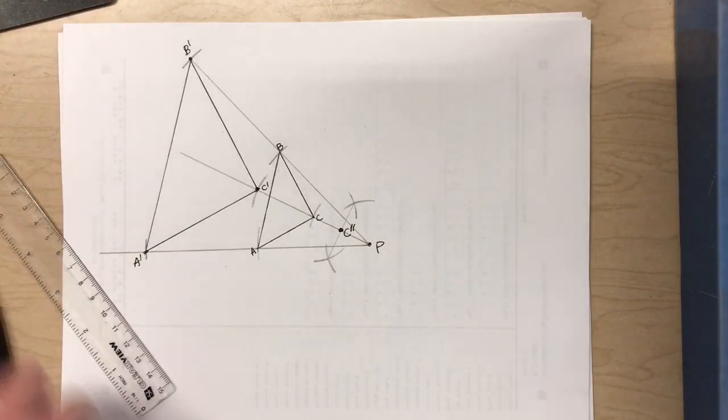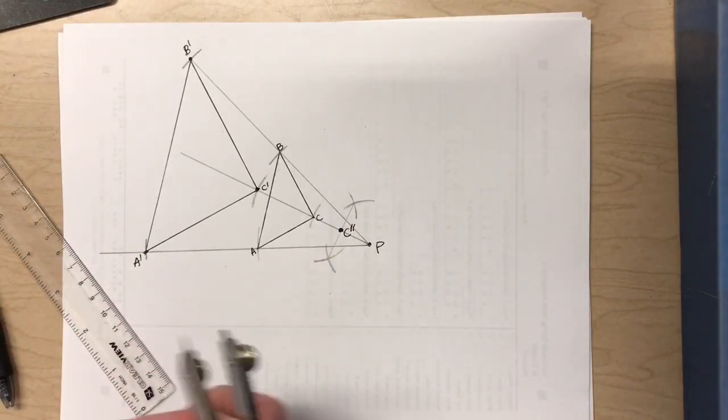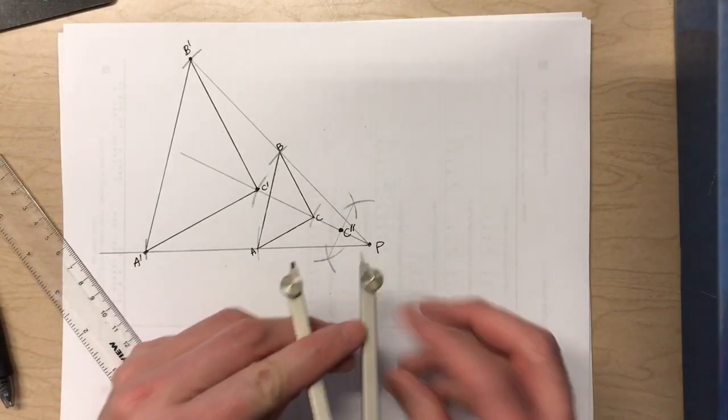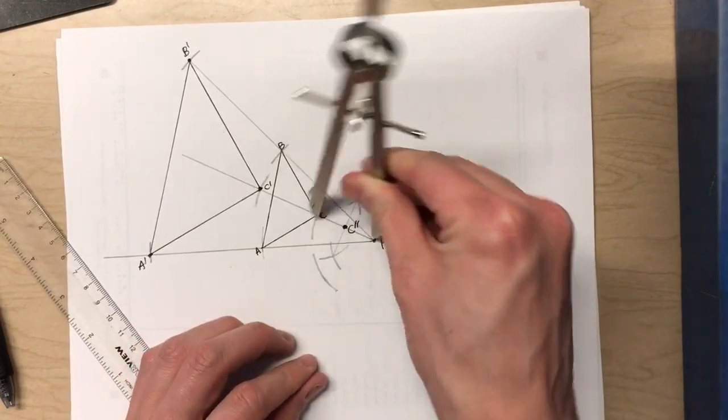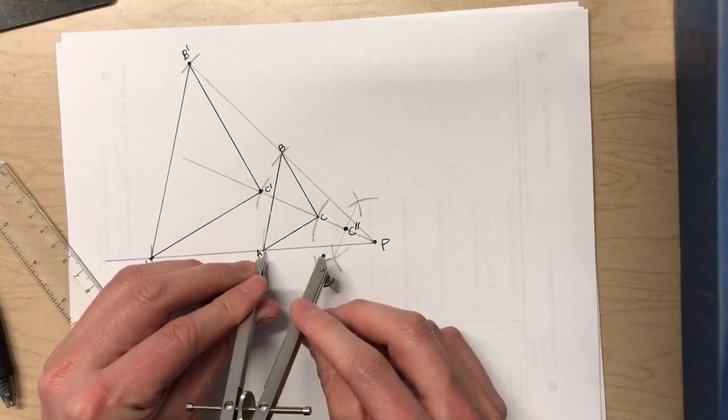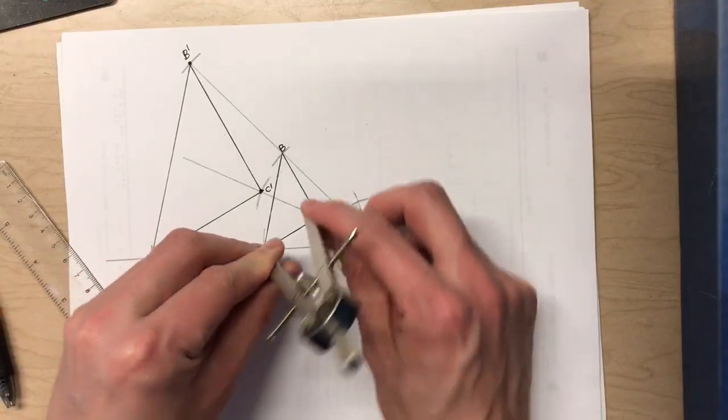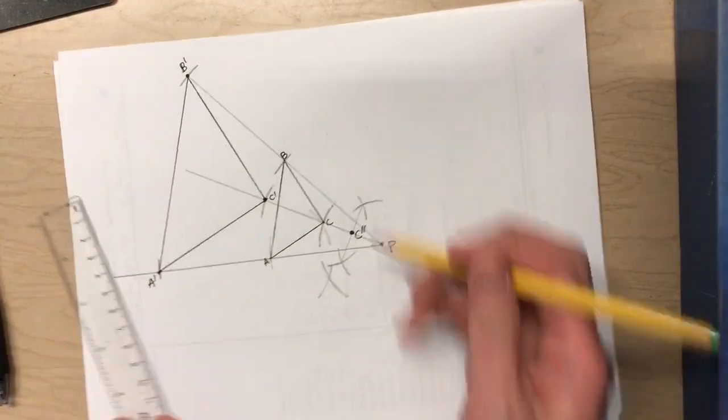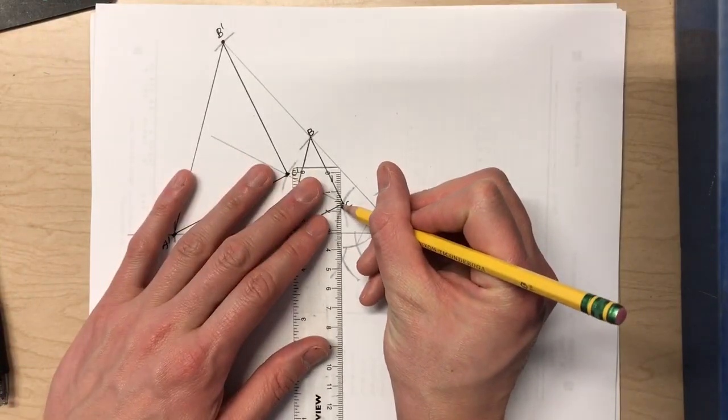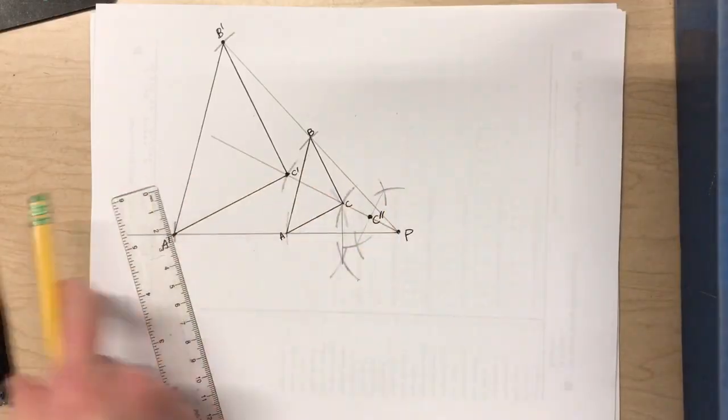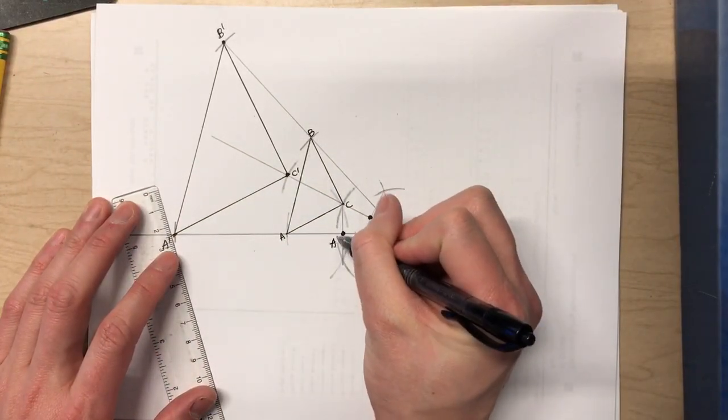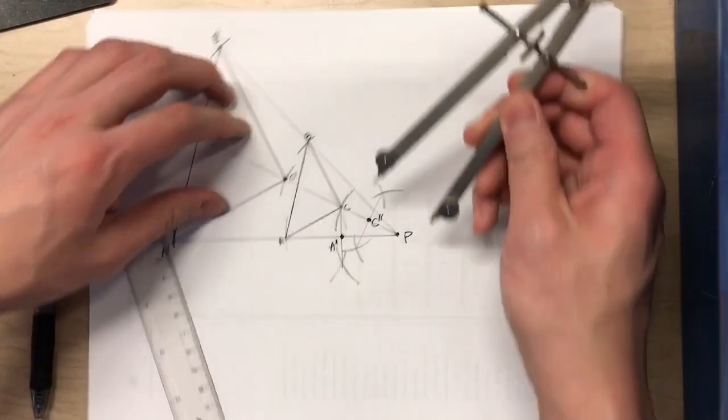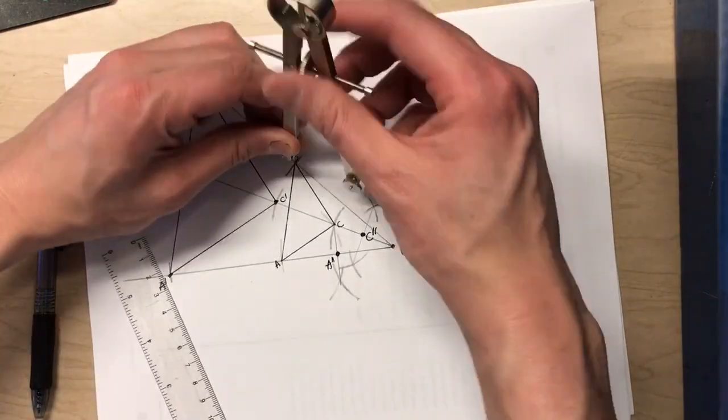Now just do that same thing for the other segments and we can construct our entire triangle with a scale factor of one half. Alright, let's see. There's the perpendicular bisector. There's midpoint. There's my A double prime.